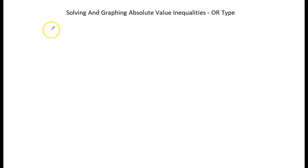Let's get our absolute value inequality: absolute value of 2x plus 4 greater than or equal to 6.